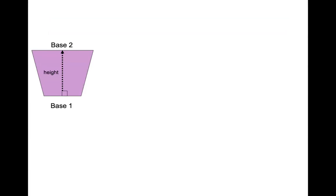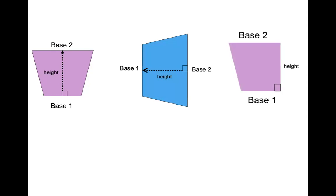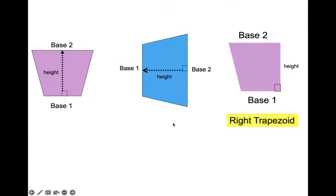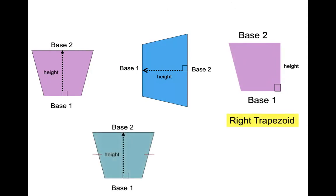Typically the bottom one we call base one and the top one base two, but we could flip it. We also have two special kinds of trapezoid. One is called a right trapezoid — just because one side is marked as right, the consecutive angle to it would be right as well. They will only ever mark one of those as being right, but both of them are right. The other special trapezoid is an isosceles trapezoid, where the two legs are congruent.